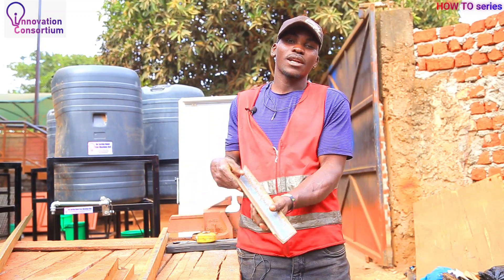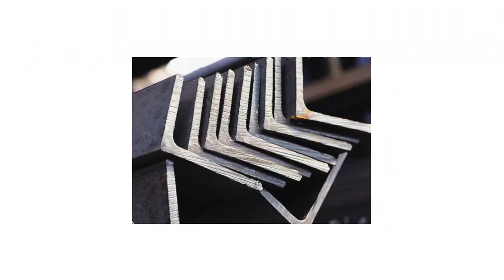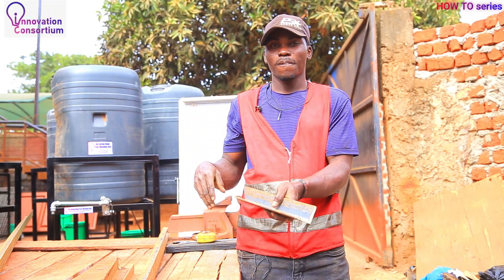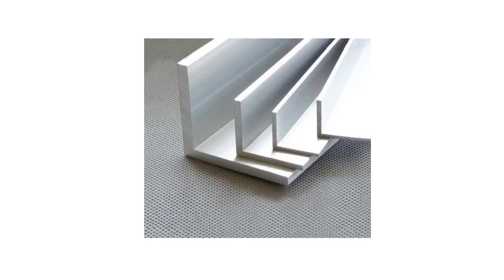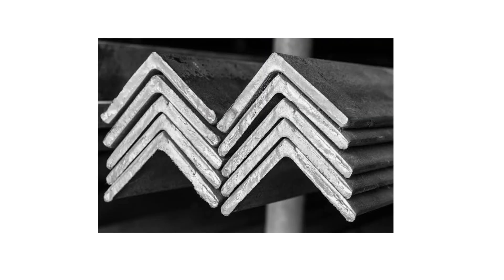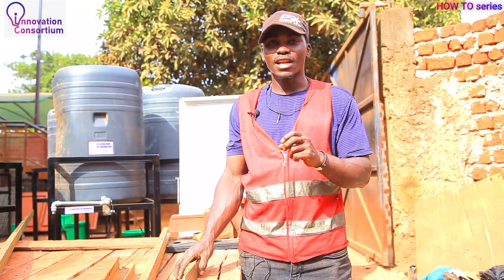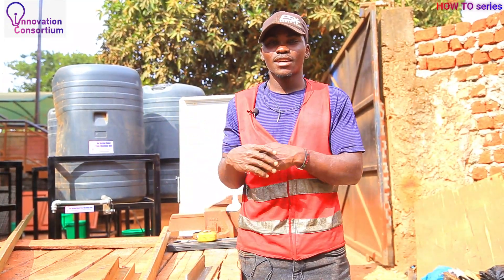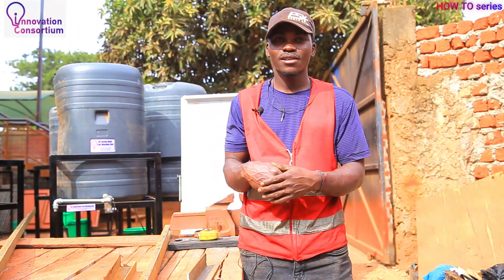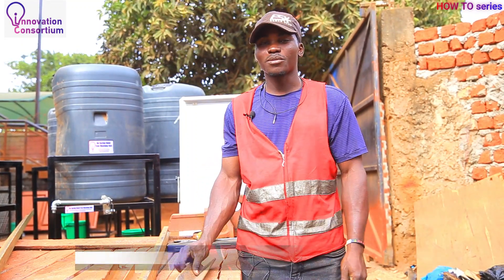Starting with the different types of materials, this one I'm holding here is low carbon steel, or mild steel. The other types of material include aluminium, stainless steel angle lines, galvanized steel angle lines, and many other types. So the classification in accordance to materials will be within those ranges: mild steel, stainless, aluminium, galvanized, and many others.